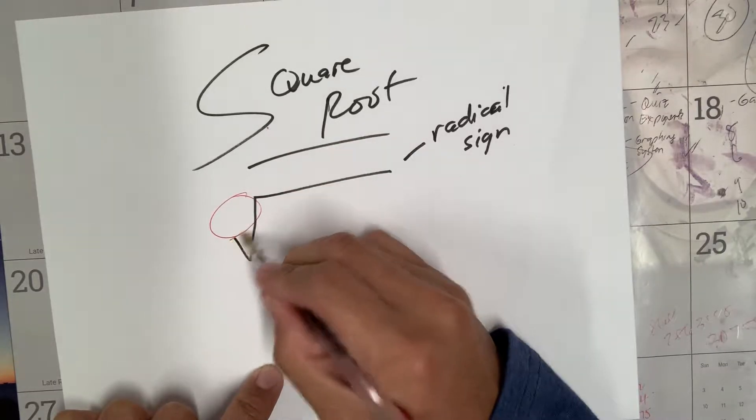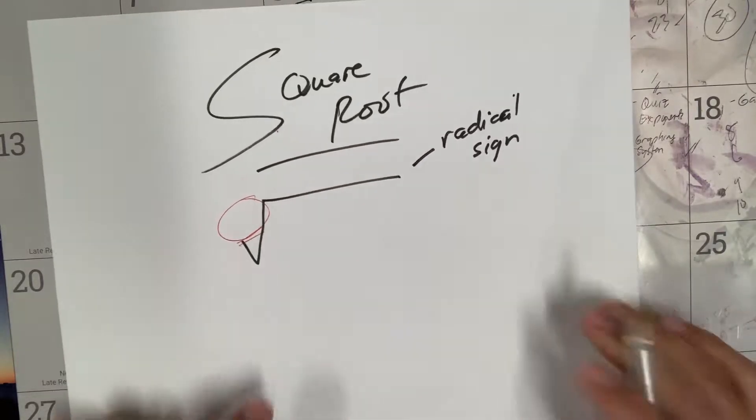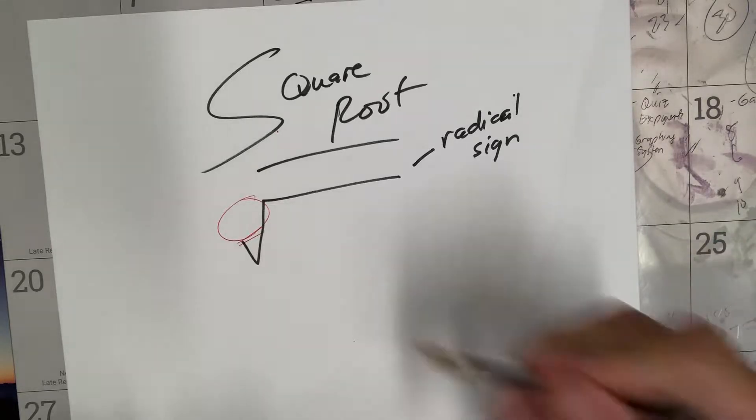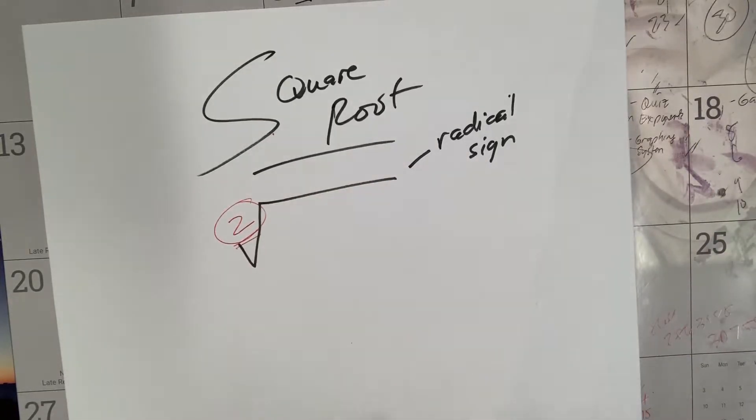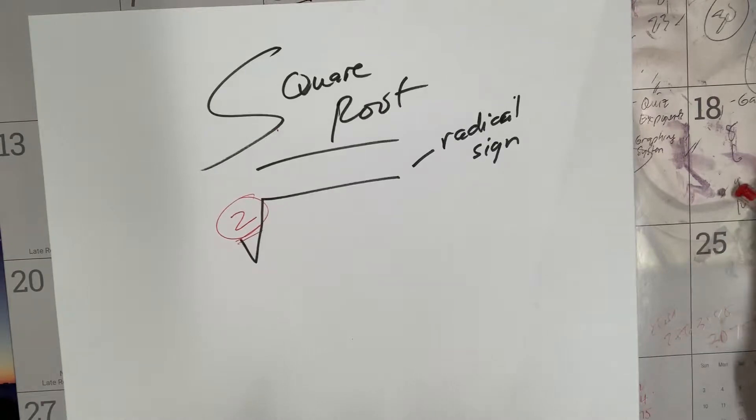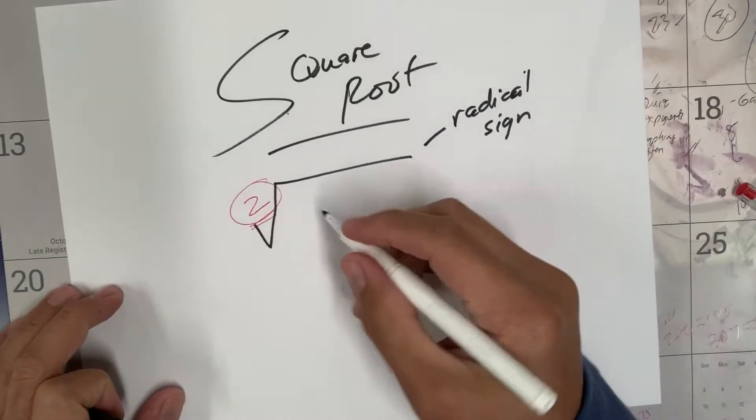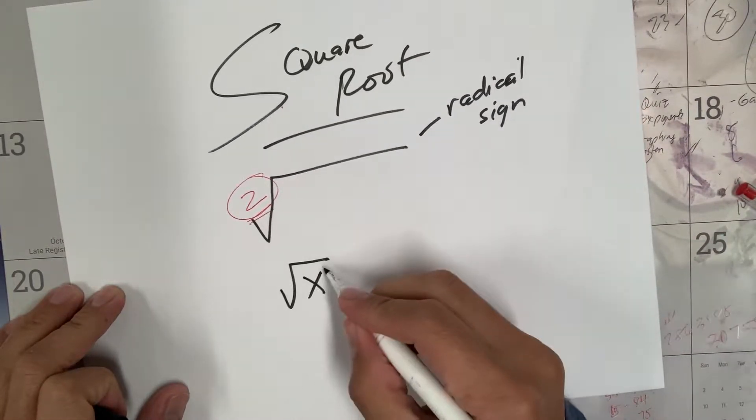Two. That's invisible - you don't see it. So if I have a square root of x, there's an invisible one right here as an exponent and there's an invisible two right there. Again, you don't see them.